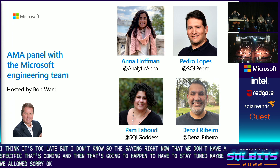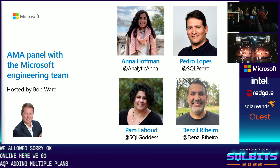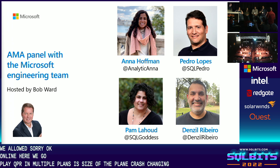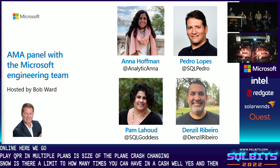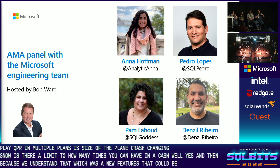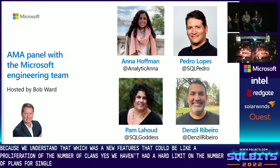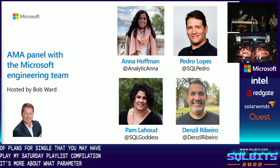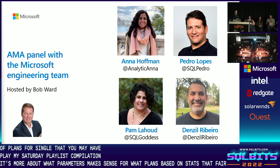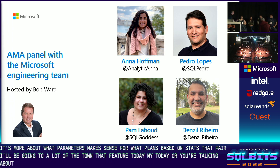An online question: with all the new Intelligent Query Processing features adding multiple plans, is the size of the plan cache changing? Pedro clarifies: is there a limit to how many plans can be in the cache? Yes — because of potential proliferation of plans with new IQP features, they have set a hard limit on the number of plans per single query hash. Bob adds that with parameter-sensitive plan optimization, it's not a plan per user, but rather about what parameters make sense for what plans based on statistics. Pedro confirms this and notes he'll go into detail in his session today.